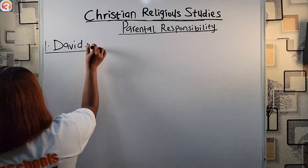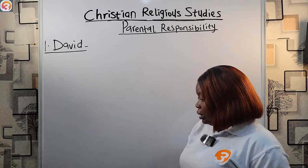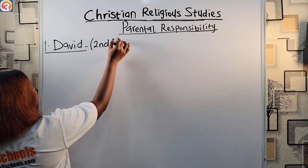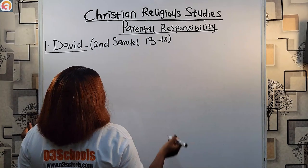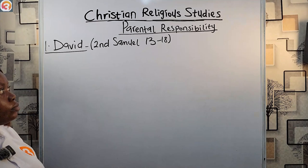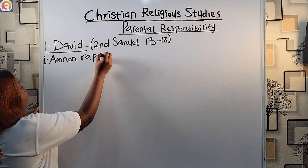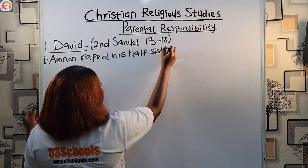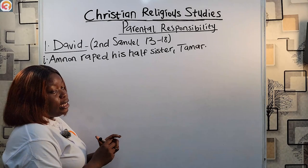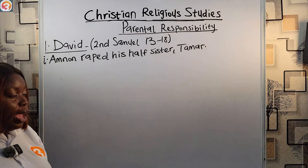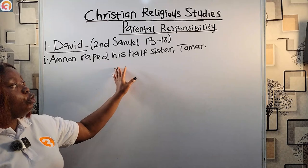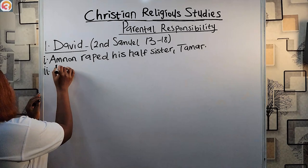First up is David. David is a parent in the Bible that lacked parental responsibility, and the account is written in the book of Second Samuel, chapters 13 to 18. David lacked parental responsibility: his son Amnon raped his half-sister Tamar. This made Tamar's brother from the same mother, Absalom, very angry, and it was not recorded in the Bible what punishment David gave to Amnon for committing this sin.